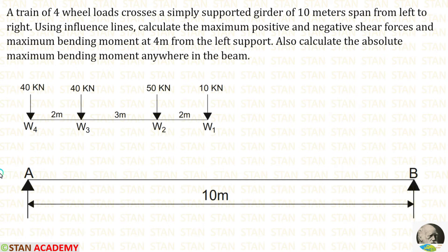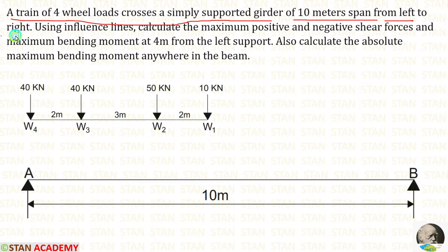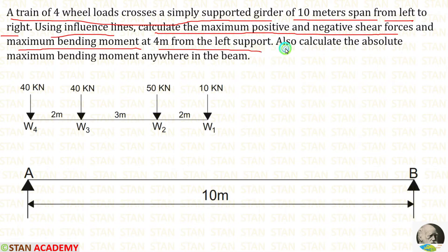Hello everyone, today we are going to see a problem based on influence line diagrams. Let us read the question: A train of 4 wheel loads crosses a simply supported girder of 10 meter span from left to right. Using influence lines, calculate the maximum positive and negative shear forces and maximum bending moment at 4 meter from the left support. Also, calculate the absolute maximum bending moment anywhere in the beam.